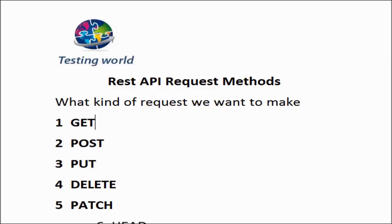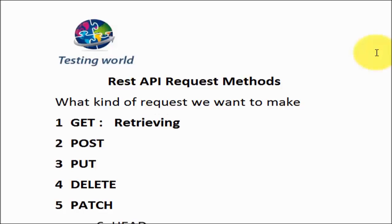First is the GET method. A request with the GET method is used only when we want to fetch some data from the server. Like if we have an application where we can search some data — we send a request and it returns search data. Whenever we want to fetch or retrieve data from the server, or make a search on the server, we are going to use a GET request.